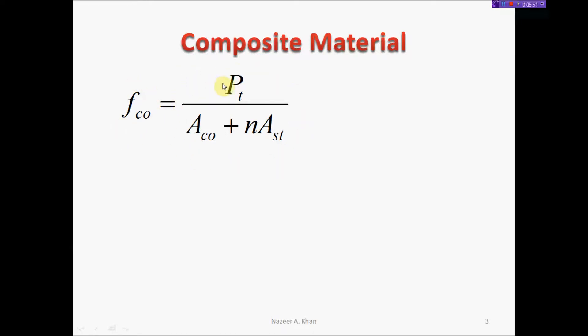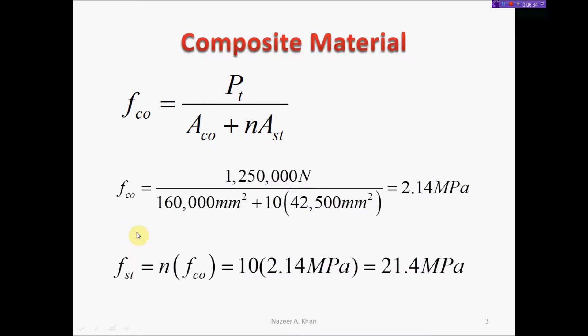The formula is f_co = P / (A_co + n*A_st). Using our values: f_co = 1,250,000 N / (160,000 mm² + 10 × 42,500 mm²) = 2.14 MPa. Remember to convert kilonewtons to newtons. For the stress in steel, f_st = n × f_co = 10 × 2.14 MPa = 21.4 MPa.